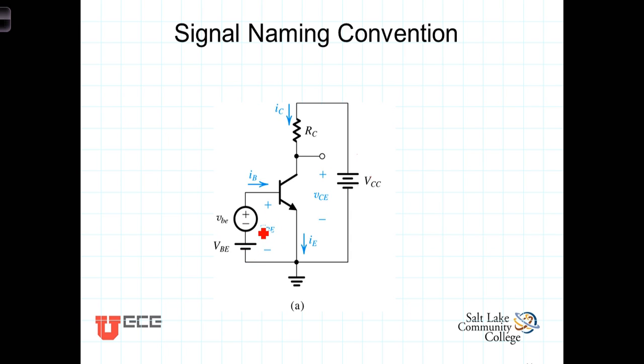In addition to these two DC sources, there is an AC or time-varying signal included as part of this circuit. Its name has a lowercase v, and then the subscripts are also lowercase.